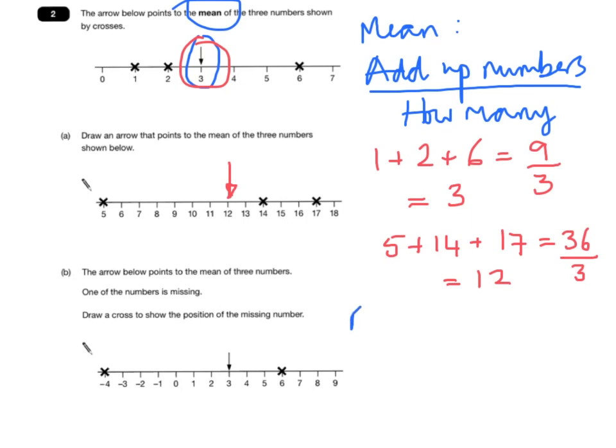And then in the final example, this is more difficult because we haven't got one of the numbers, but we do know the mean. So if the mean is three, and there are three numbers, then we know that the total must be nine, because three times three is nine.